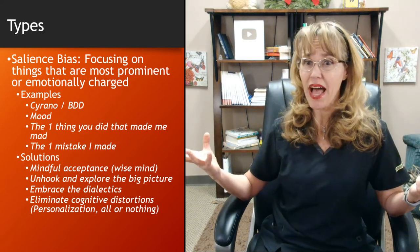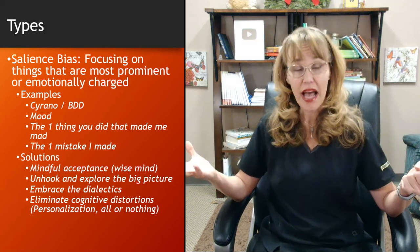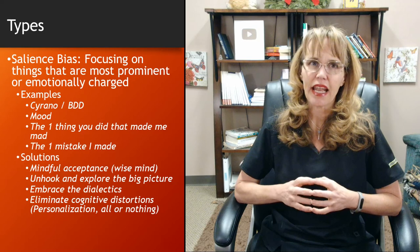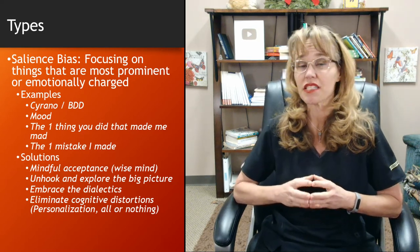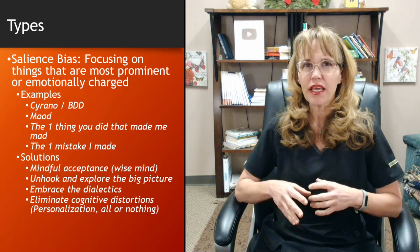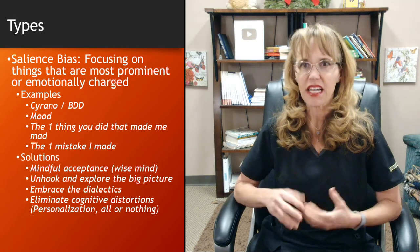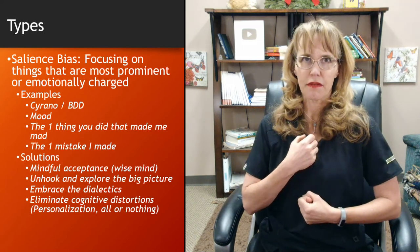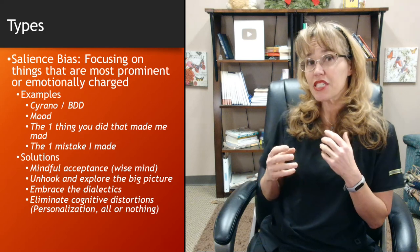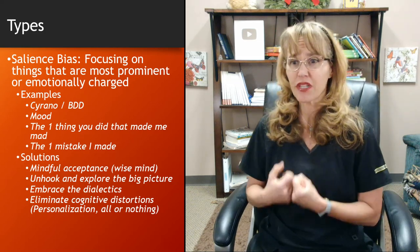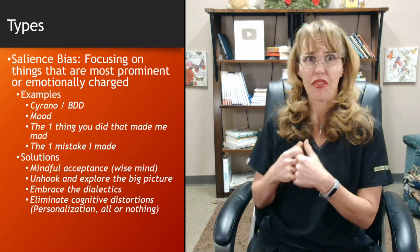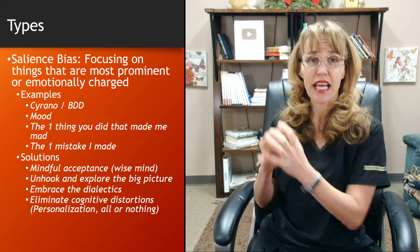Embrace the dialectics — embrace the good with the bad. Yes, I made a mistake, and I also had some successes, so embrace both of those. Also eliminate cognitive distortions. Things like personalization or all-or-nothing thinking tend to be characteristic of the salience bias. With personalization, we remember things that are emotionally charged because we feel like they're our fault. All-or-nothing thinking tends to make us feel disempowered, unsafe, and angry — so it's emotionally charged — and those things tend to take a more prominent focus.